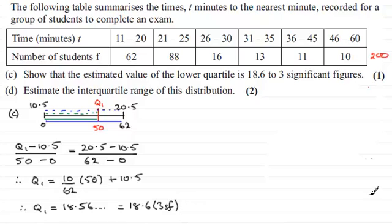Now we need to move on to the next part. Part D. And in part D then we've got to estimate the interquartile range of this distribution. So we need to find out then the upper quartile. Because remember the interquartile range is the upper quartile minus the lower quartile.